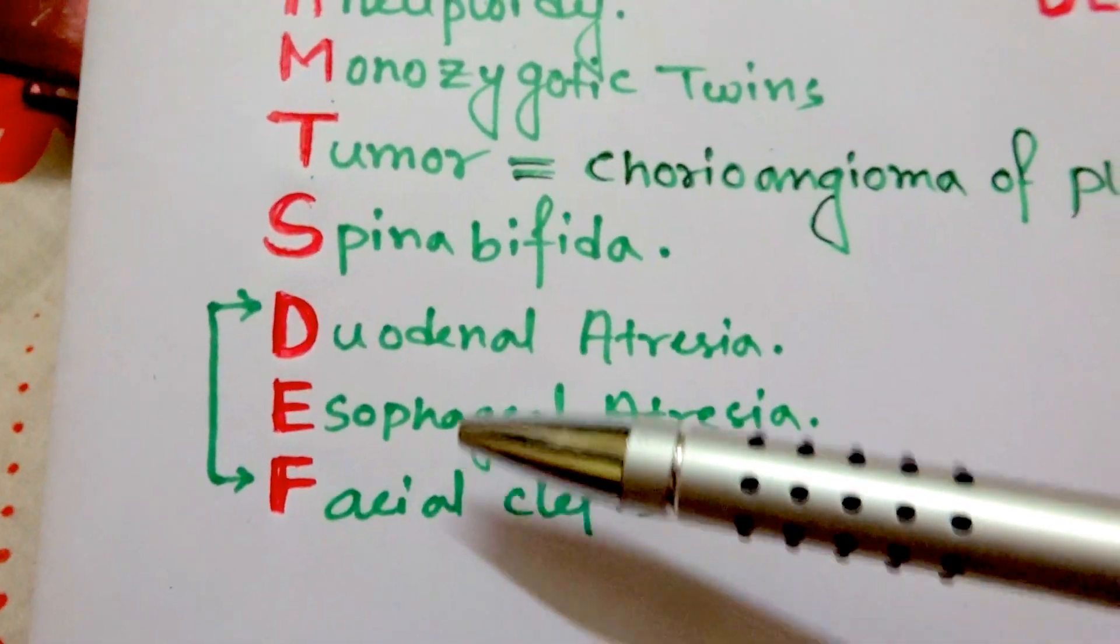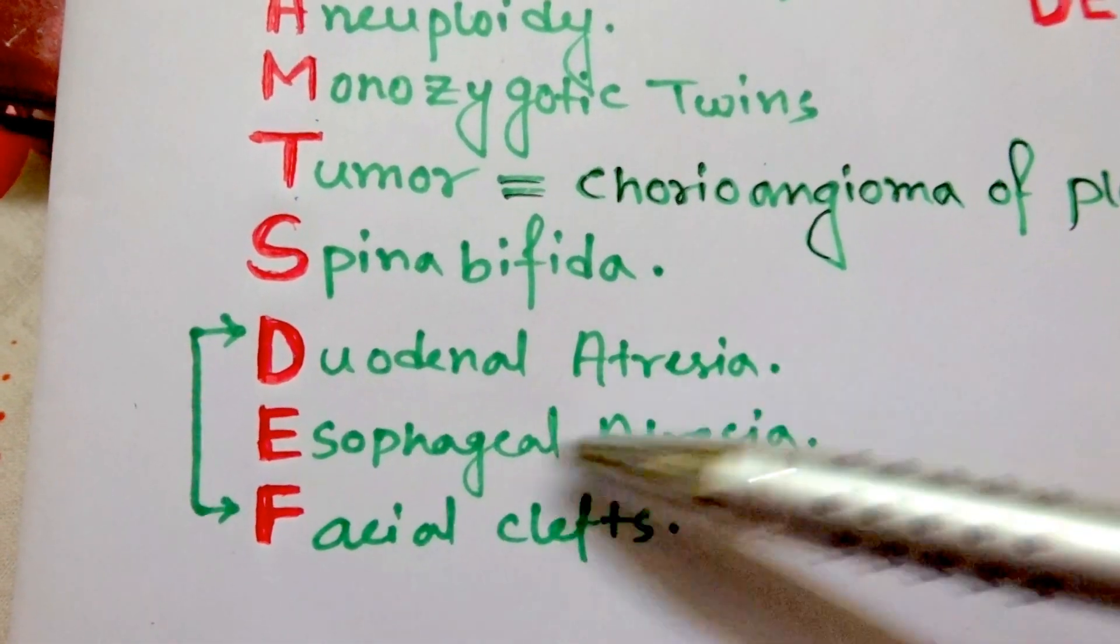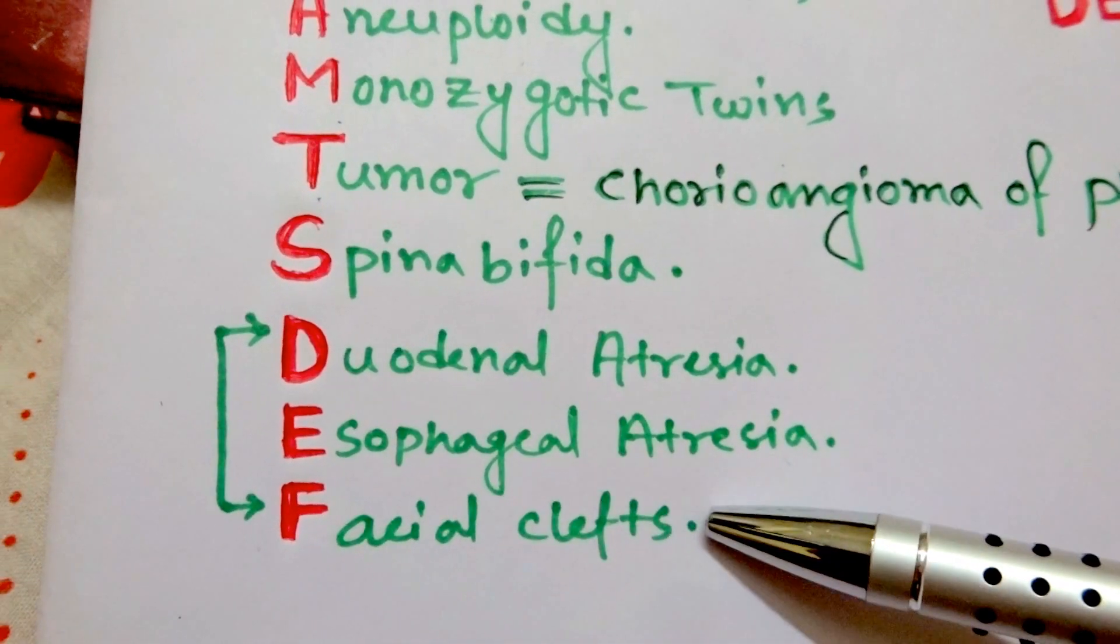Now for DEF it is respectively duodenal atresia, esophageal atresia, and facial clefts.